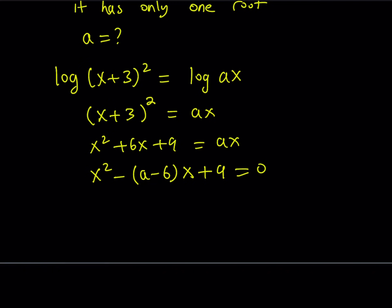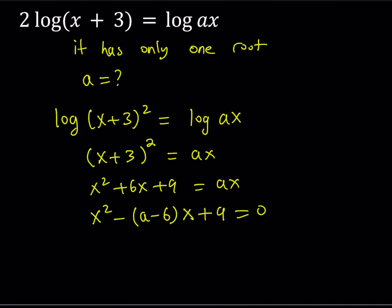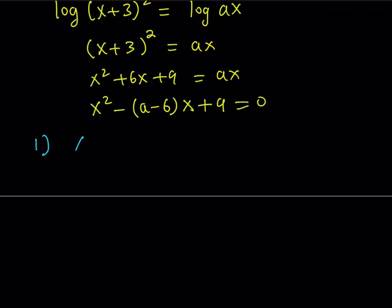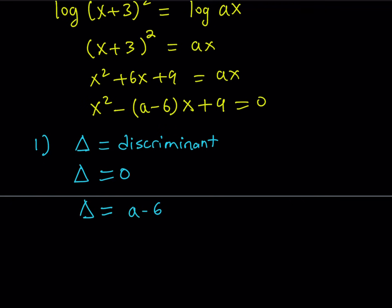This is our quadratic equation, and the important question is whether it's quadratic, because we need one root. There are different cases. The first case is we want a discriminant — which I'm going to call delta, the Greek letter; some people write it as a capital D — and I want delta to equal 0, which means the solutions are equal. So let's calculate delta: it equals b squared, that's (a minus 6) squared, minus 4 times 9, set equal to 0.